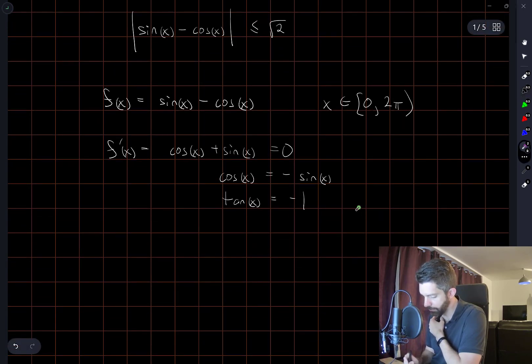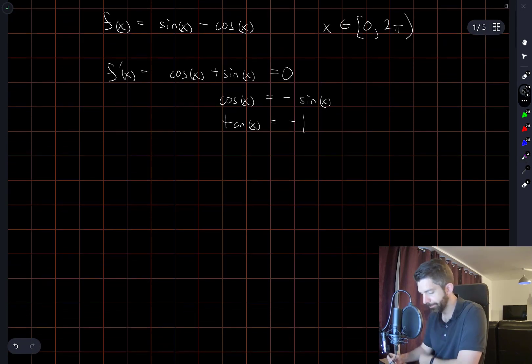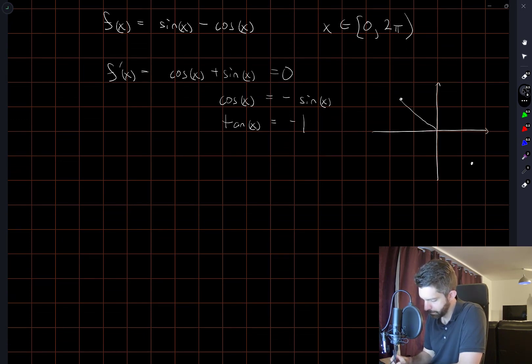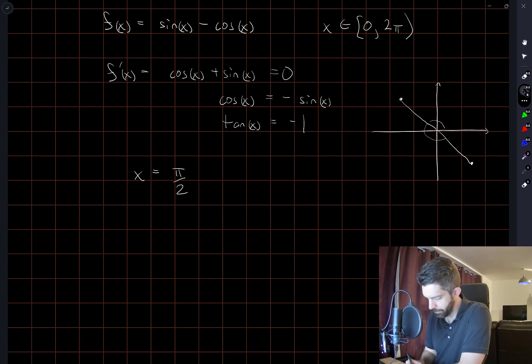And then I want to solve for all values of x in that range such that tan(x) is equal to negative 1. There's probably two values of this, right? So x can be equal to π over 2 plus π over 4, which is 3π over 4.